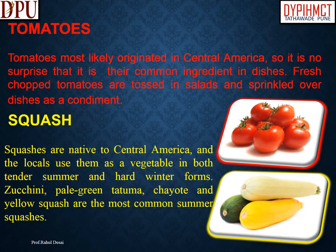Tomatoes most likely originated in Central America, so it is no surprise that they are a common ingredient in dishes. Fresh chopped tomatoes are tossed in salads and sprinkled over dishes as a condiment. Squashes are native to Central America, and locals use them as a vegetable in both tender summer and hard winter forms. Zucchini, pale green chayote, and yellow squash are the most common summer squashes.